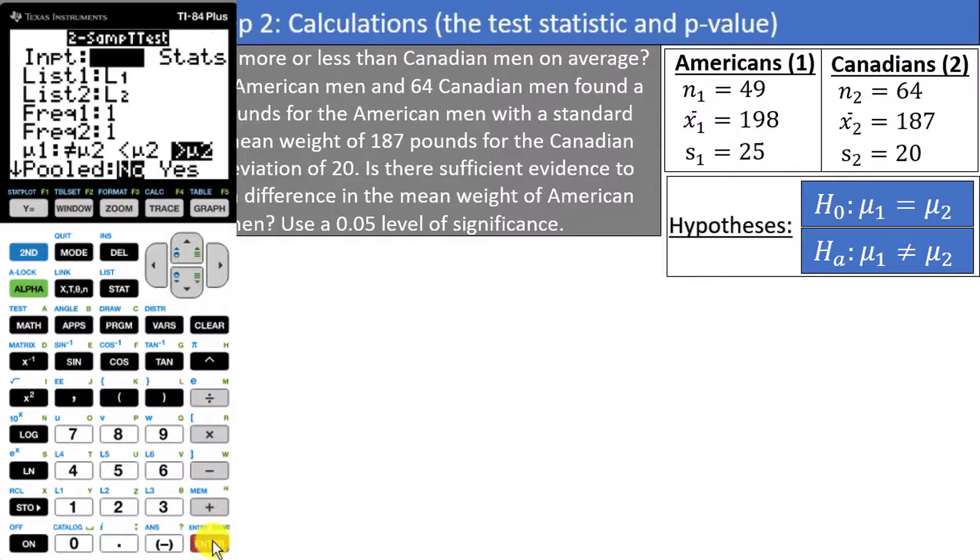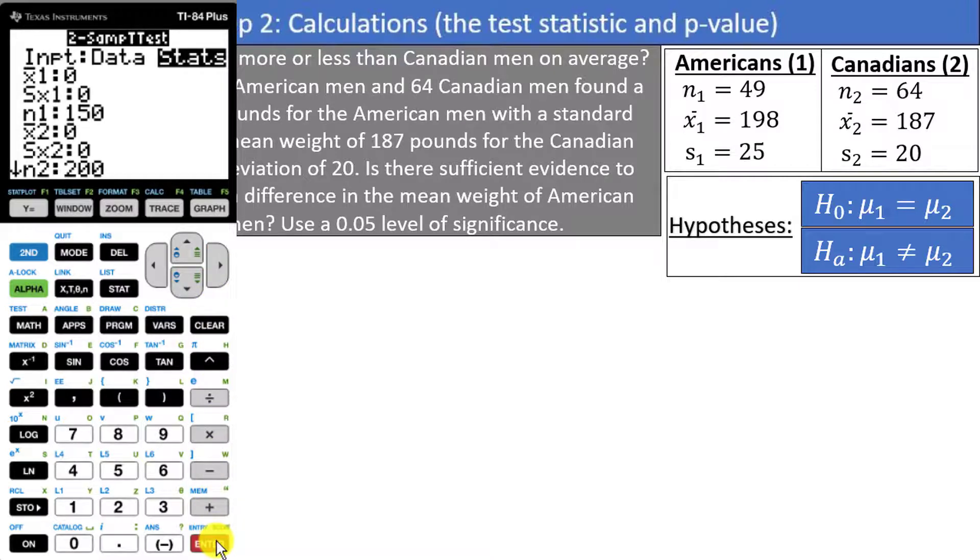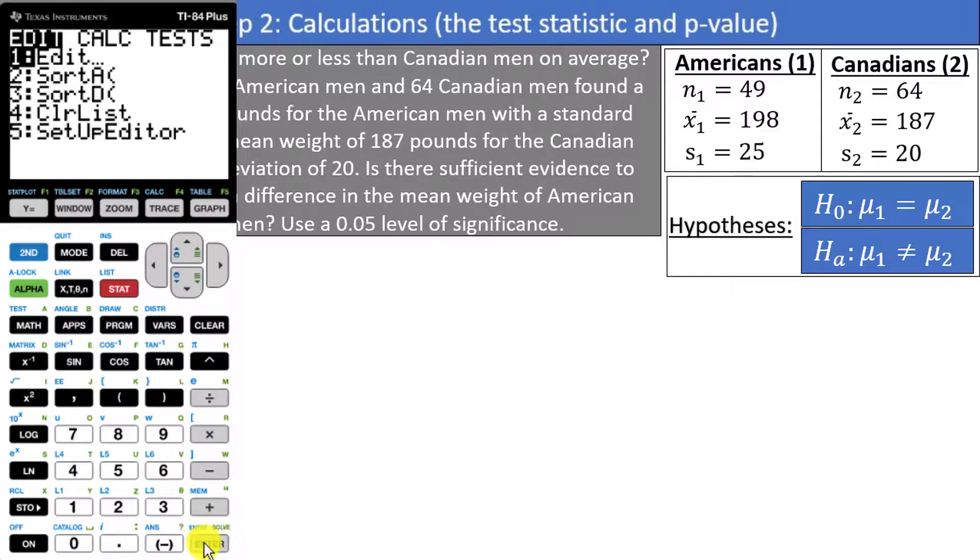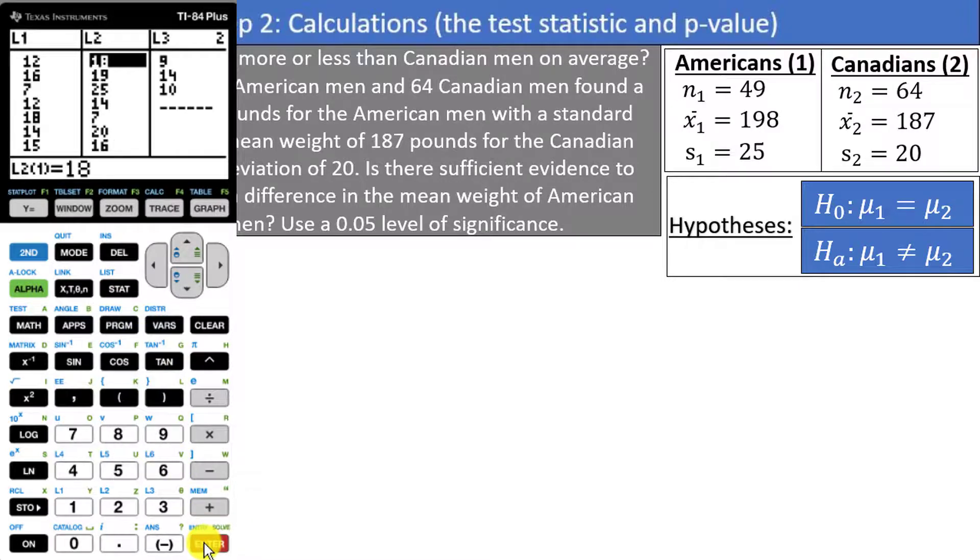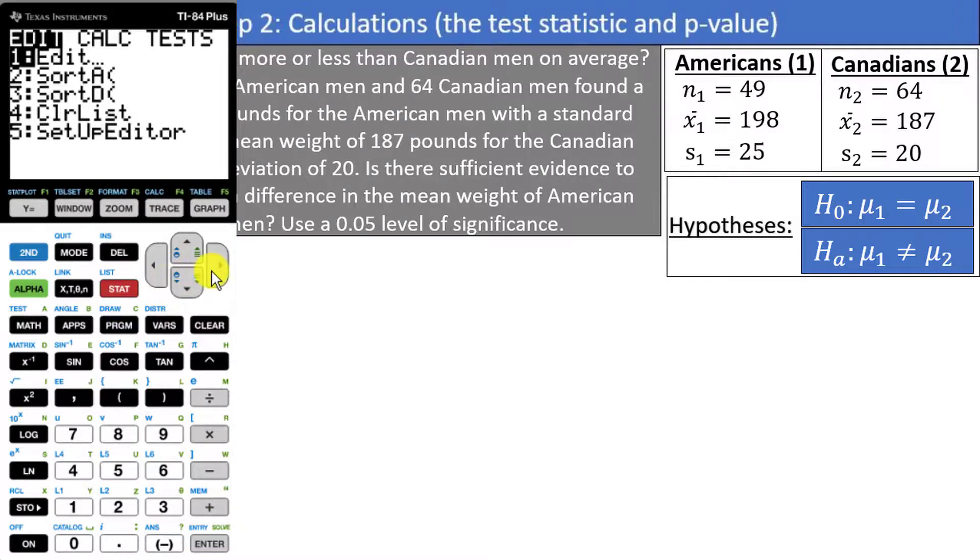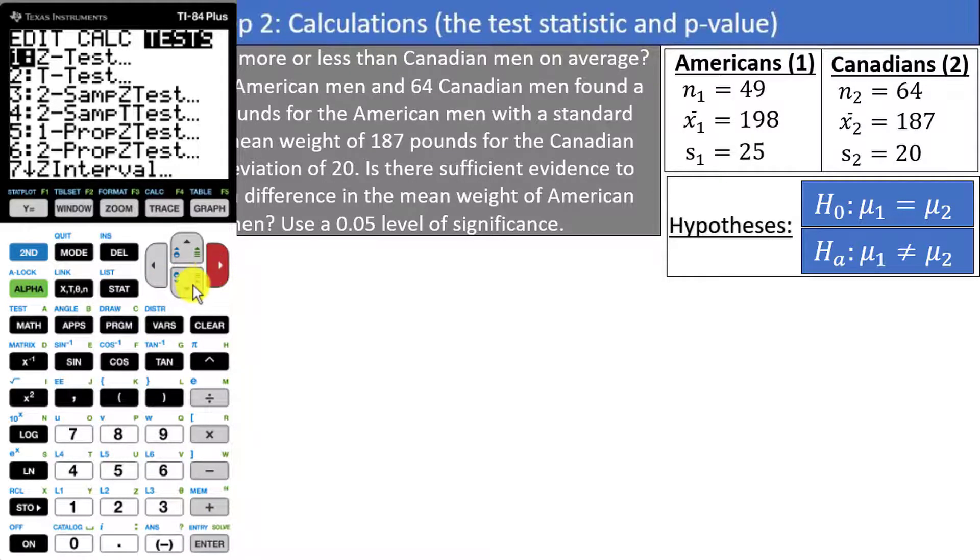We were given statistics like x bar, s, and n, so make sure to select stats if it isn't selected already. You should select data if you are given actual data in the problem. In that case, you should go to stat, edit, and then enter the data into list 1 and list 2 like I have here, and then return to stat, tests, and then scroll down to 2 sample t test again to finish the test.